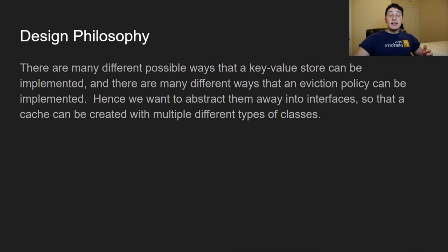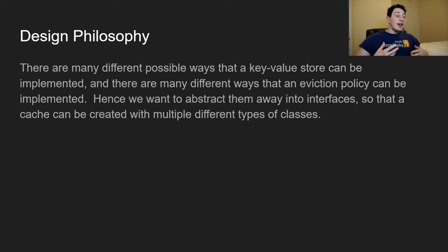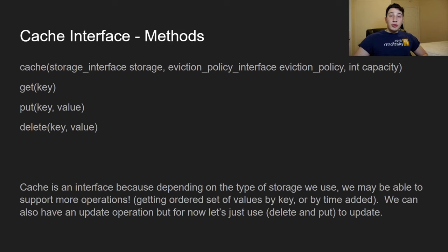What's our design philosophy going to be? This is where we get more into the object-oriented design part. We want our cache to be able to use many different policies and potentially different types of storage. Something that's going to come in very handy here is interfaces — we can use interfaces to define a storage interface or an eviction policy interface, allowing us to plug in many different implementations and build many different types of caches.